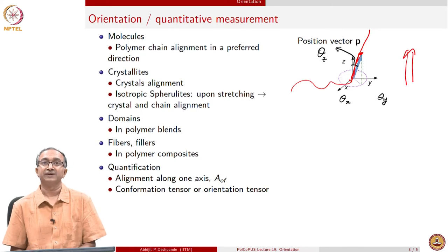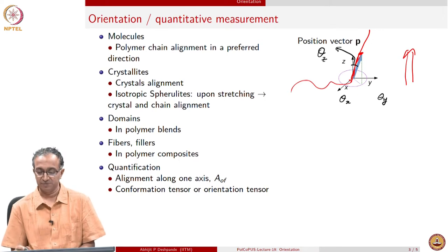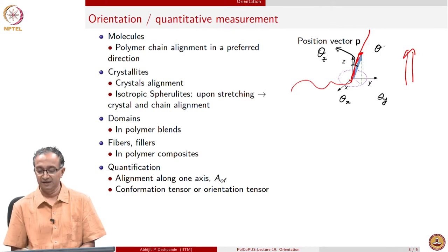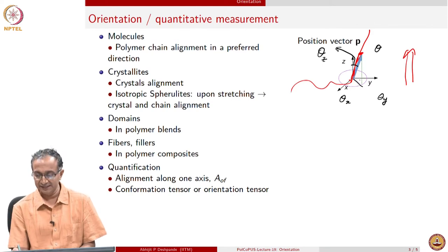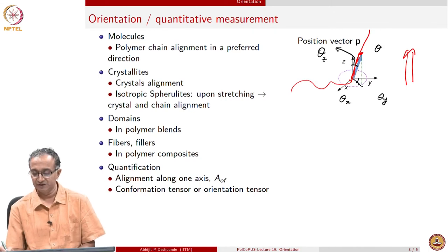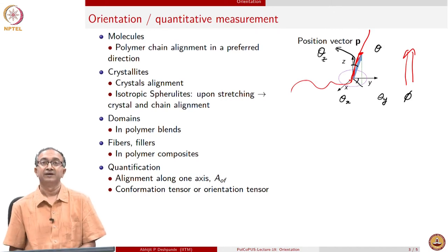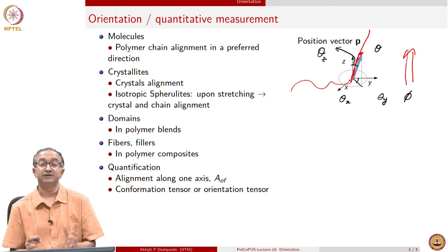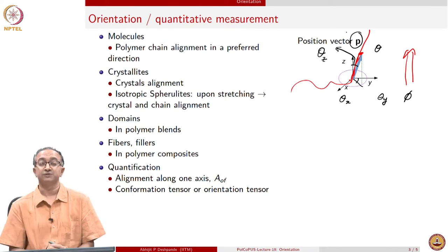The other way of quantifying this orientation is by the usual spherical coordinate system description, where we say theta is the angle with the z axis, and then we do the projection onto the x-y plane. The angle related to the projection on x and y is usually denoted by phi. These two different ways allow us to look at and quantify the orientation — what is this position vector.